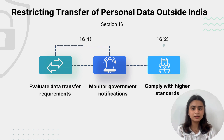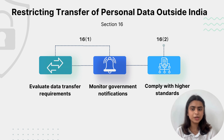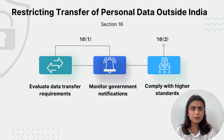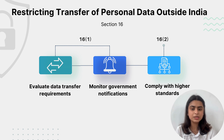Third, comply with higher standards. Here we need to ensure adherence to any higher standards of data protection or additional restrictions imposed by any other applicable law, recognizing that Section 16 Subsection 2 maintains the validity of such regulations. For example, companies like Wipro and IBM implement GDPR-compliant measures for data transfers to Europe, even though Indian regulations may not impose such stringent requirements, ensuring they meet the highest data protection standards.